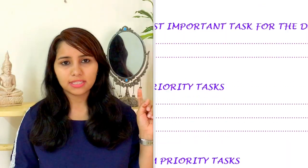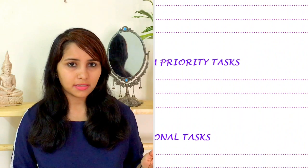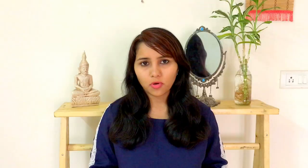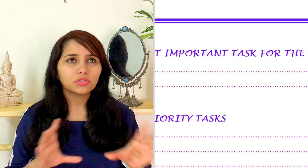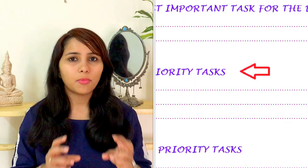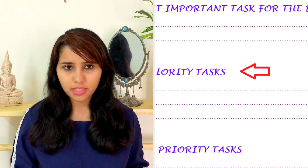Number two: I use the principle of prioritization. As you can see on the screen, this format of a task list has different categories — there is most important, high priority, medium priority, and additional tasks. The first category, most important, has just one task, but this is the most important thing to be done in a day and accomplishing this will add maximum value to my day. Once I'm done with the most important, I move to the next category — high priority — where I list about three things in the order of their importance and tackle them once I'm done with the first category.